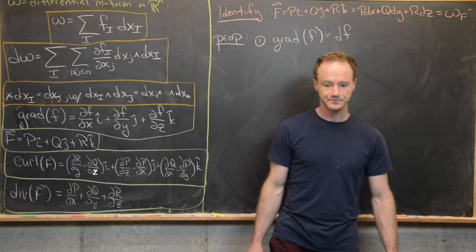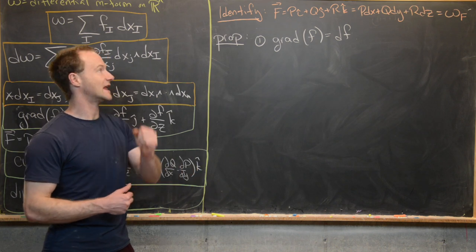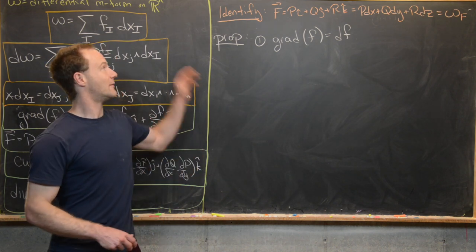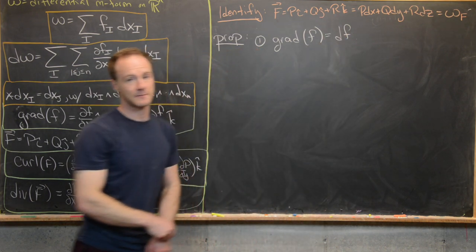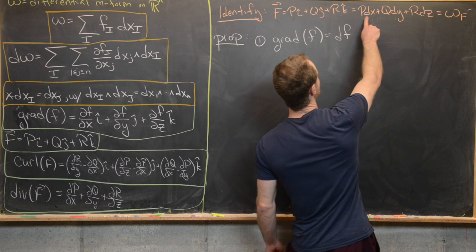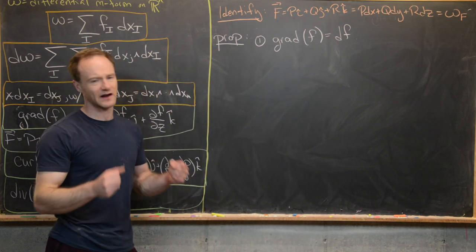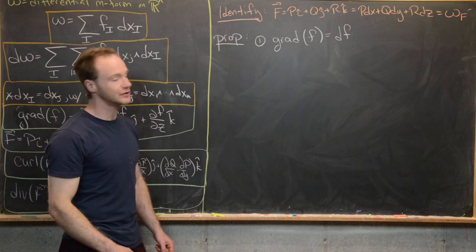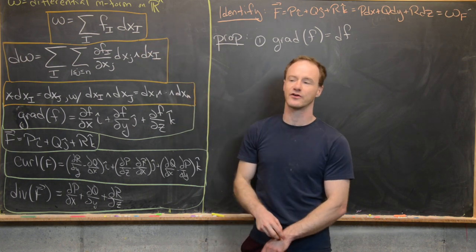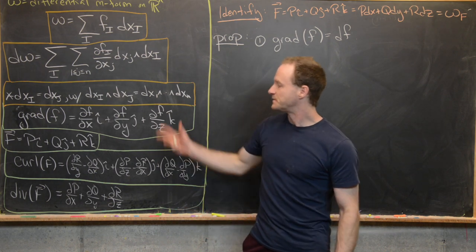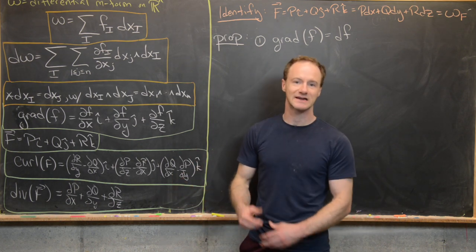Now we want to make an identification between vector fields on ℝ³ and 1-forms on ℝ³. The vector field F = P î + Q ĵ + R k̂ is identified with the differential one-form ω_F = P dx + Q dy + R dz. We want to find relationships between the general exterior derivative framework and these special cases from vector calculus.